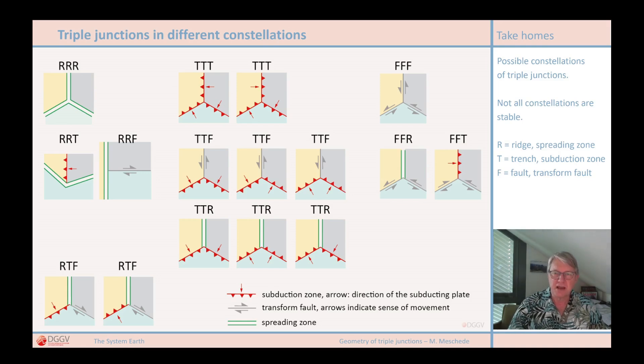So we have R, T, and F. A whole range of constellations are shown here in the figure, but not all of them are stable or even possible. Not only the type of boundary, but also the subduction polarity plays a role. It is important in which direction the subduction is going, which plate is subducting and which is the overriding plate.